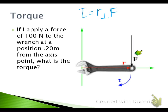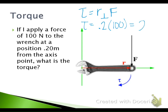Here we're applying a force in the downward direction. Our radius comes to intercept at a perpendicular angle, which means that's going to be our R-perpendicular. So we're solving for torque — our R-perpendicular or lever arm will be 0.2 meters and our force will be 100 newtons. The total torque should be 20, and the units for torque are newton-meters — there's no special name, just newton-meters.